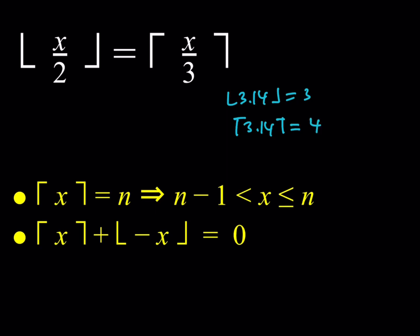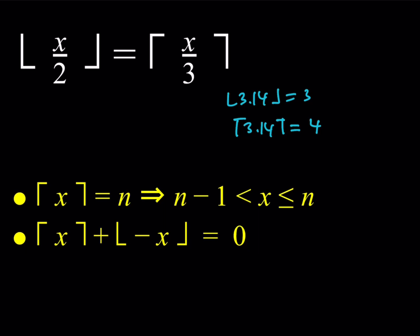These bullet points: the first one says pretty much the same thing. You have to be careful because with the floor function, the lower value is always n. With the ceiling function, it's n minus 1 — it's a little different. The second bullet point is also interesting because it allows you to relate the floor value of x, or negative x, with the ceiling value of the same variable.